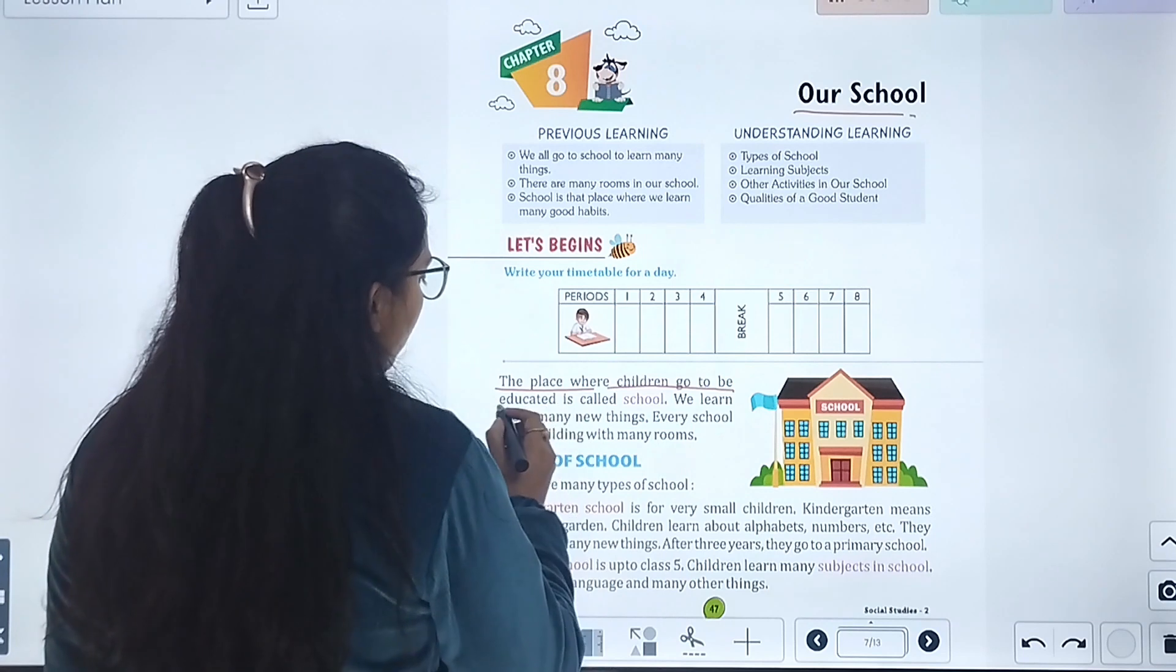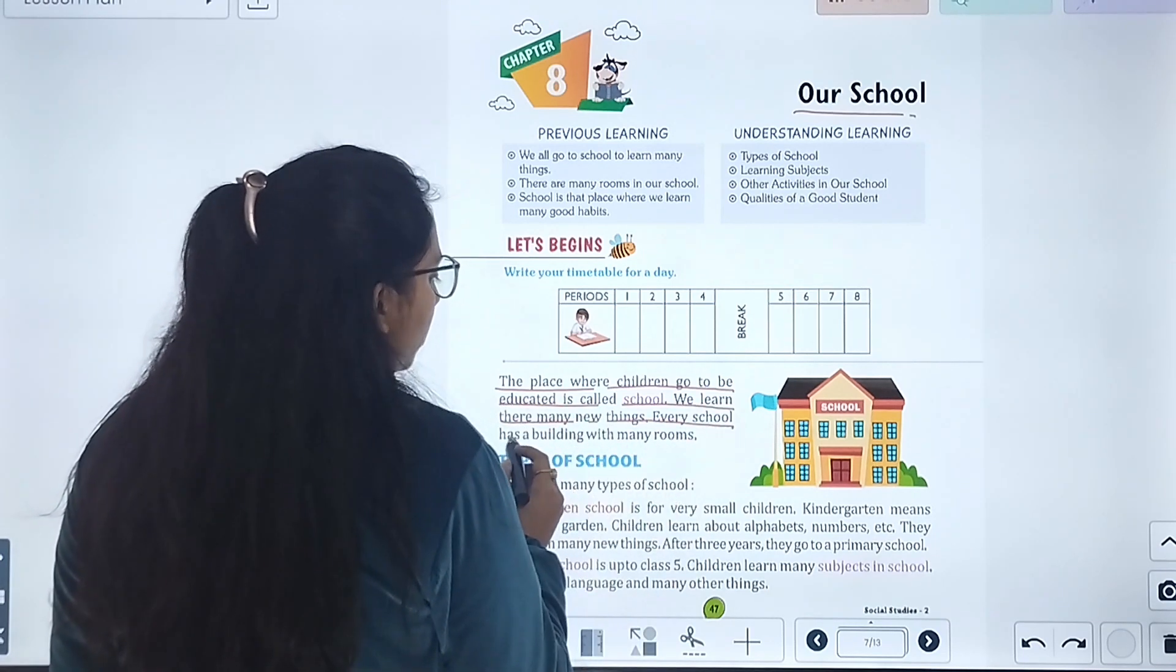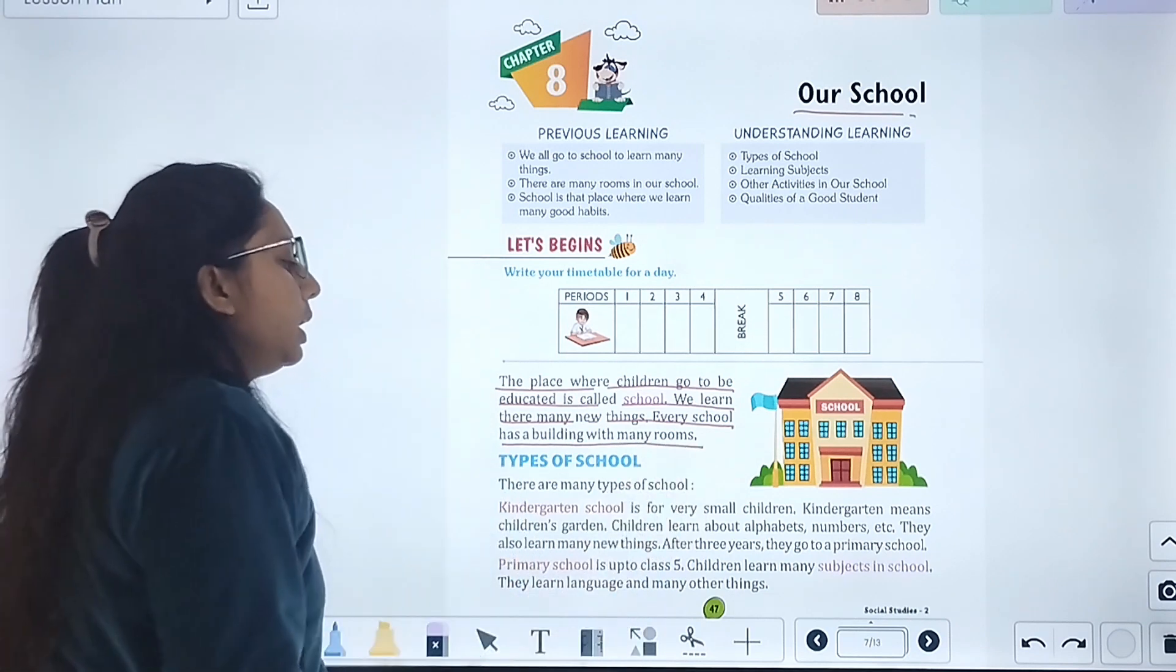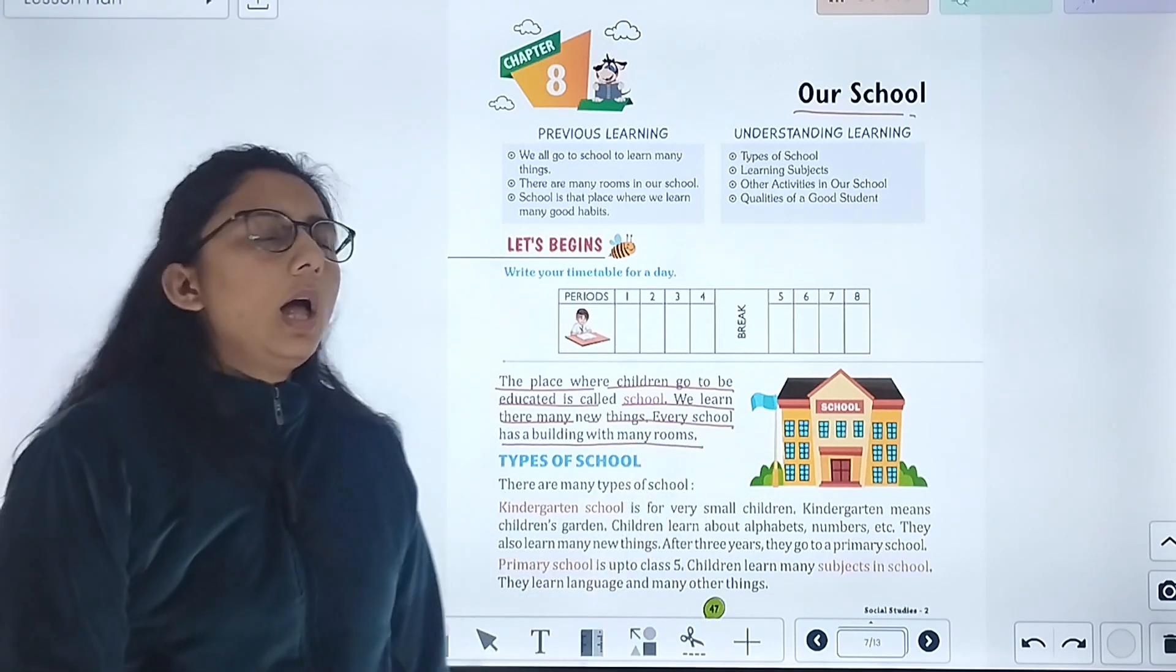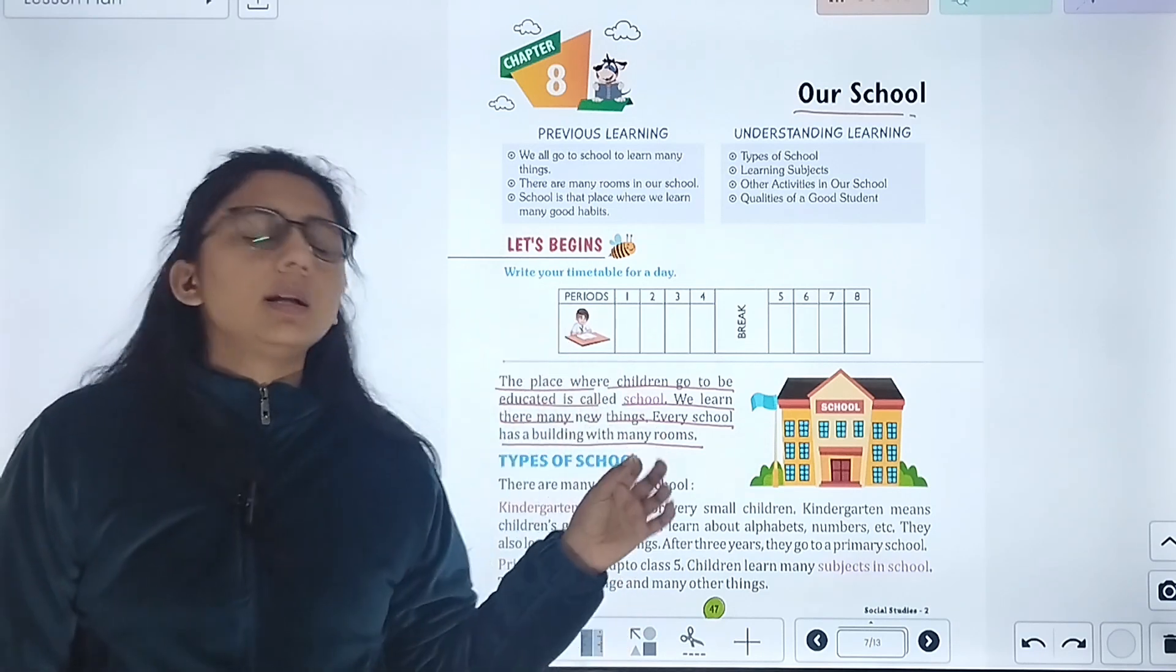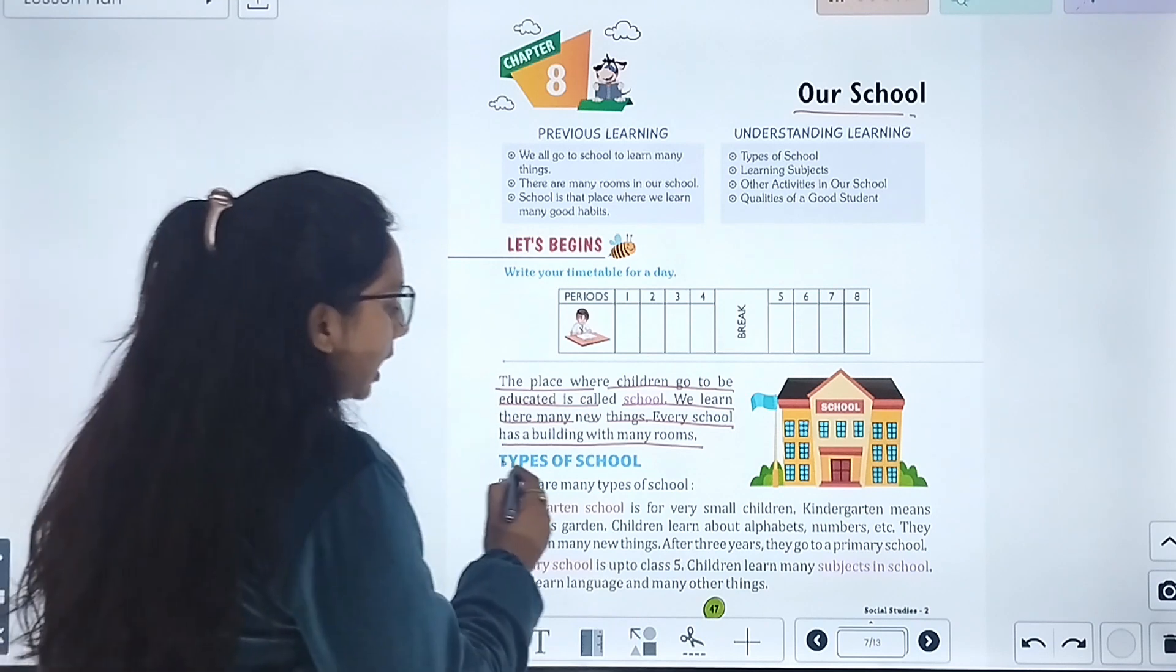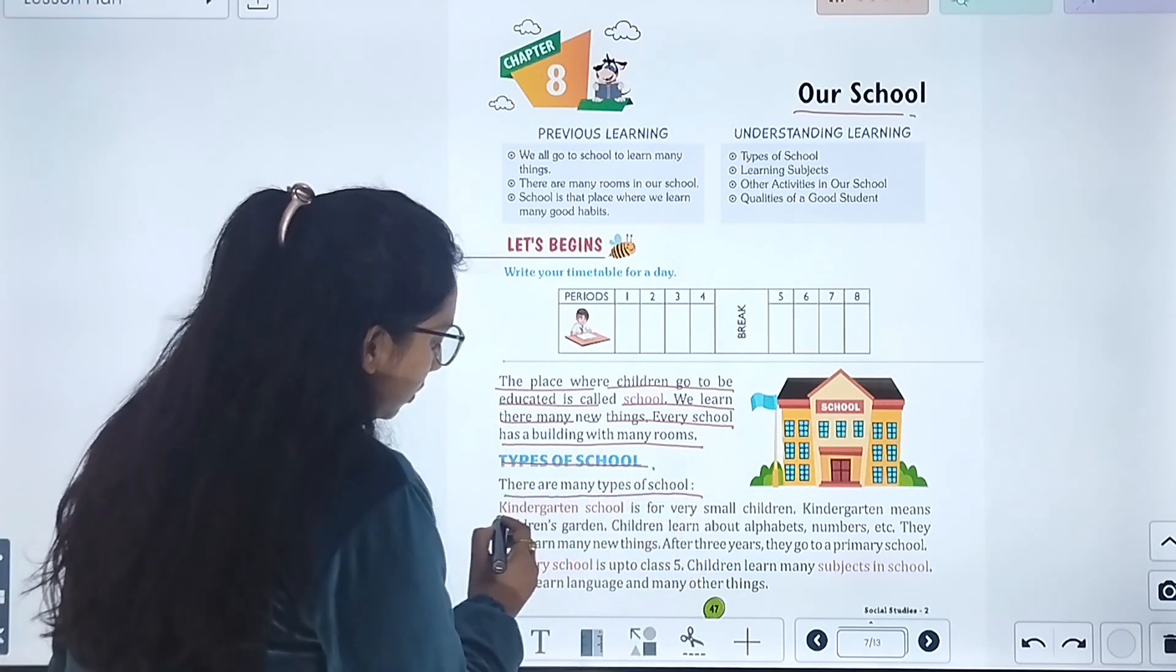A place where children go to educate is called a school. We learn many new things. Every school has buildings with many rooms. Children go to educate in school. There are many buildings in every school with many rooms.